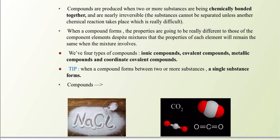As you know, we have four types of compounds: ionic compounds, covalent compounds, metallic compounds, and coordinate covalent compounds.